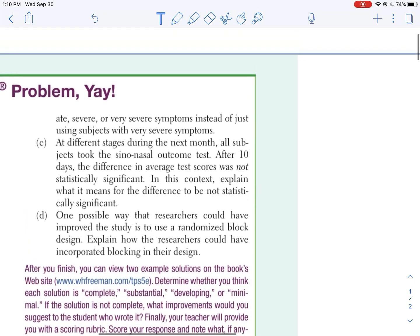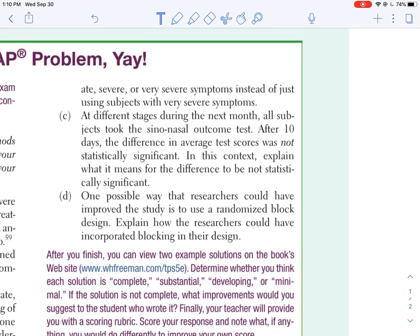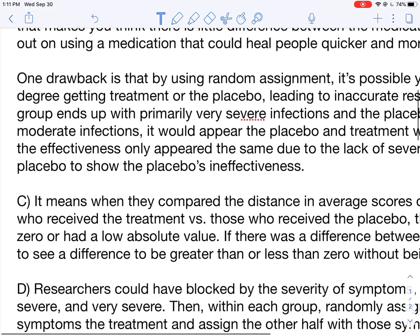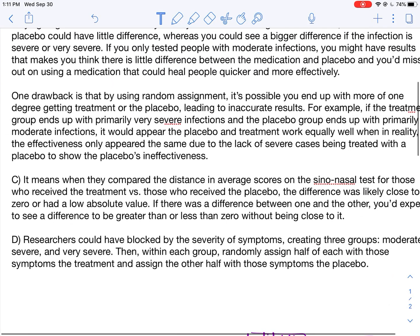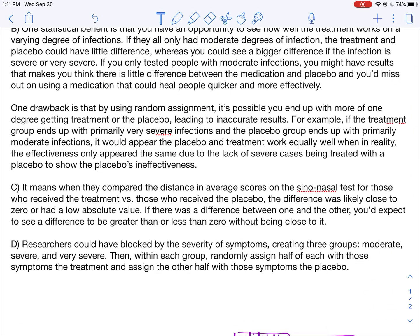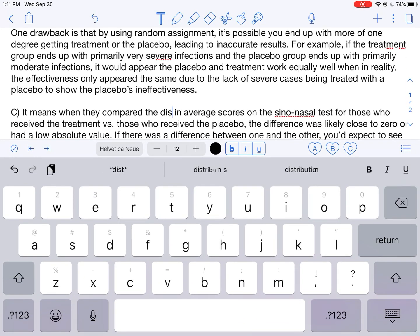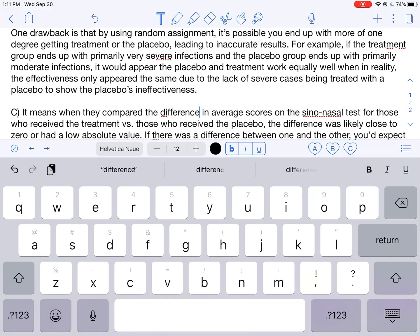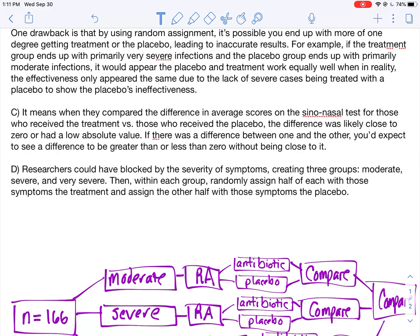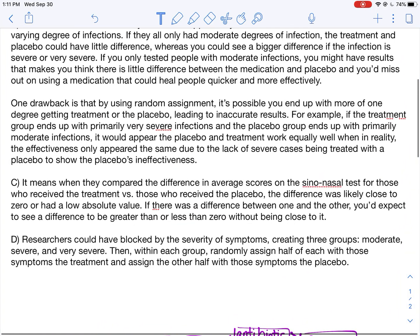All right, and then for part C, excuse me, at different stages during the next month they all took the sino-nasal test. After 10 days the difference in average scores was not statistically significant. In this context, explain what it means to not be statistically significant. I'll share with you my answer. I said it means that when they compared the difference in average scores—I should have said difference, excuse me, so I'm going to change that. It's all right, that's why we're going through this. Distance I guess wouldn't be the worst thing but I'm going to go with difference.